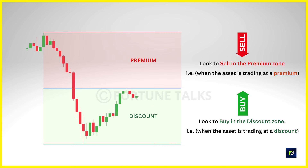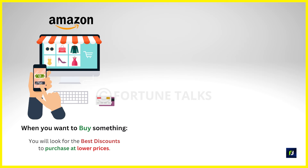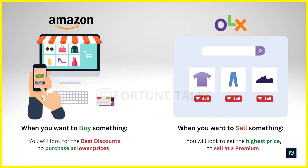Think of it this way: when you want to buy something from Amazon or Flipkart, you will look for the best discount that you can get, so that you can buy it at a price lower than the actual going price in the market. And when you want to sell the same product, you will definitely look to get the highest price possible — that is, you want to sell it at a premium or at an expensive price compared to the actual going price in the market.